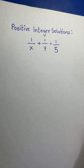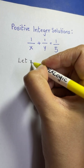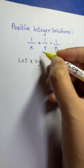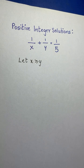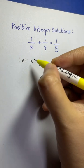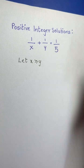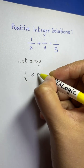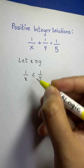Let's suppose that x is greater than or equal to y. This is the first condition we are going to suppose, because they both are positive integers. When x is greater than or equal to y, 1/x will be lesser than or equal to 1/y. So we get the inequality: 1/x ≤ 1/y.